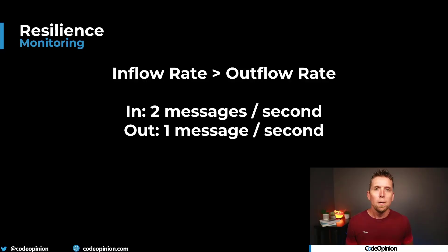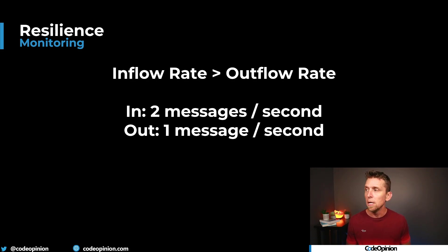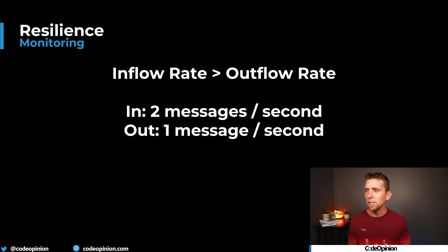This leads us to the final tip: how do you understand all this? How do you know what the timeout should be? How do you know what your capacity is for your queues? You need metrics. Having metrics for monitoring and alerting — but not just alerting when things have gone really far wrong — it's about being proactive so you can adjust your system before something goes really wrong. When talking about queues, the example is having metrics on the inflow rate, the outflow rate, so you know what your capacity is.